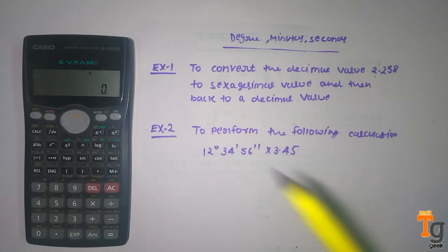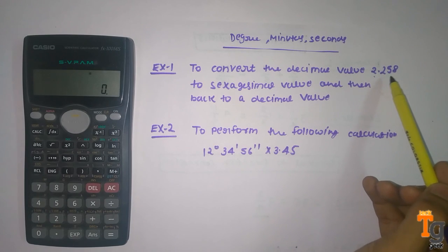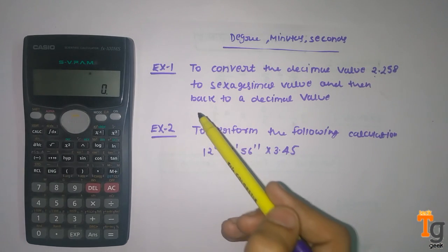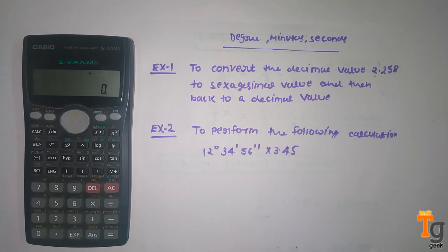So here is the first example: to convert the decimal value 0.258 to sexagesimal value and then back to a decimal value. So what we have to do for this,